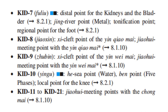Kidney 8 is the xi cleft point of the Yin Qiao Mai and the jiao hui meeting point of the Yin Qiao Mai. Kidney 9 is the xi cleft point of the Yin Wei Mai and the jiao hui meeting point with the Yin Wei Mai. Kidney 10 is the he sea point and the water point of the kidney, the confluence point of the five phases, and the local point for the knee.